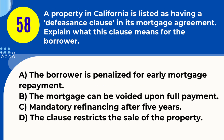Question 58. A property in California is listed as having a defeasance clause in its mortgage agreement. Explain what this clause means for the borrower. A. The borrower is penalized for early mortgage repayment. B. The mortgage can be voided upon full payment. C. Mandatory refinancing after five years. D. The clause restricts the sale of the property. Answer: B. The mortgage can be voided upon full payment. Explanation: A defeasance clause in a California mortgage agreement means that the mortgage lien is voided once the borrower has fully repaid the loan.